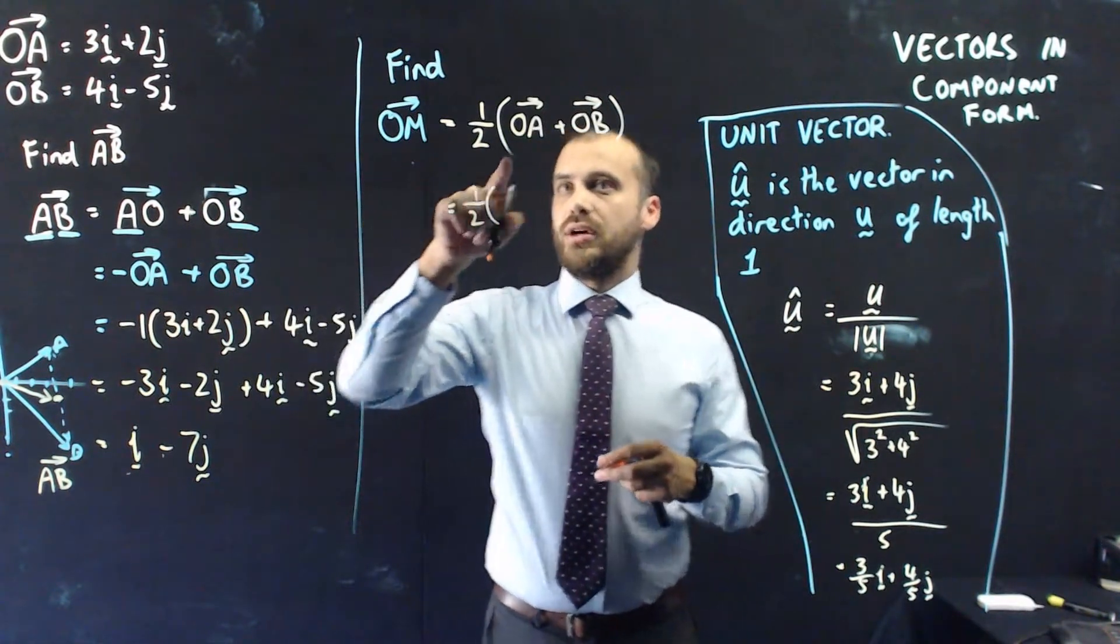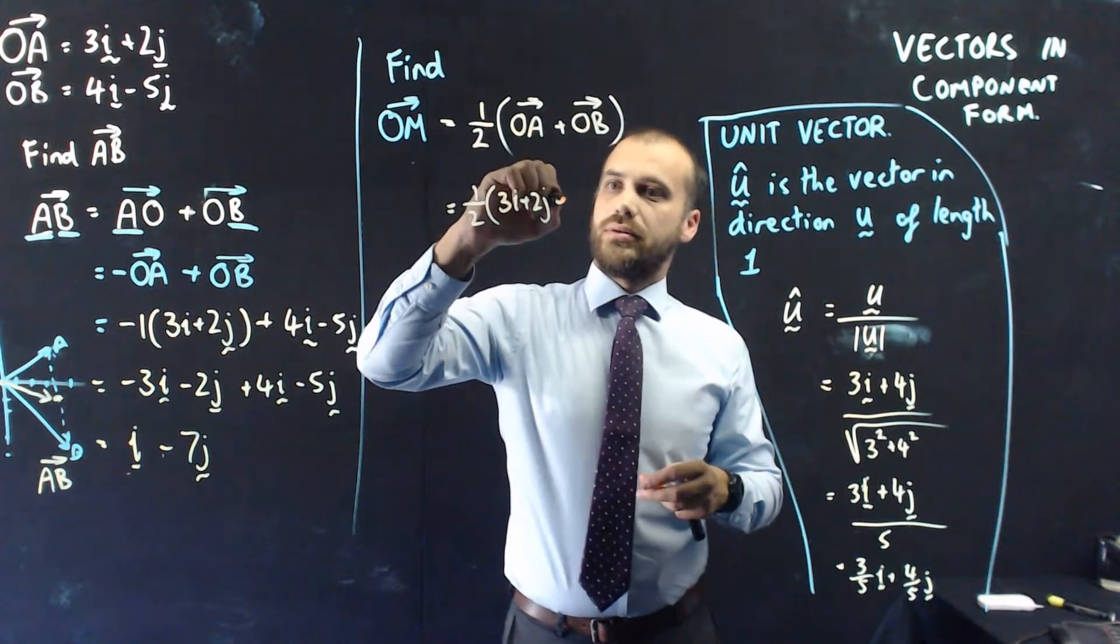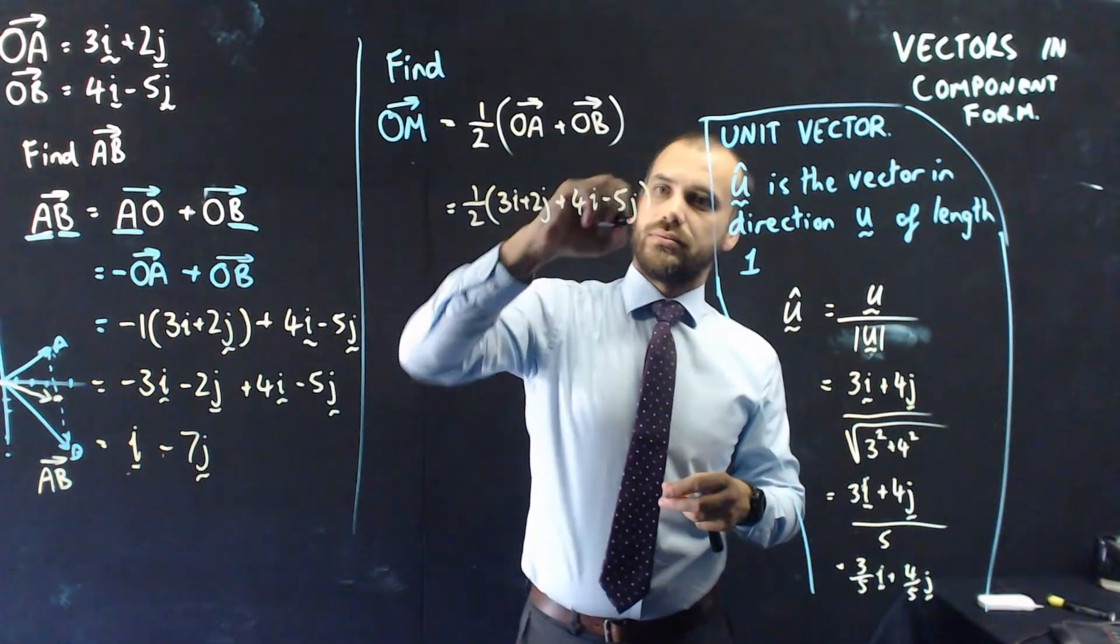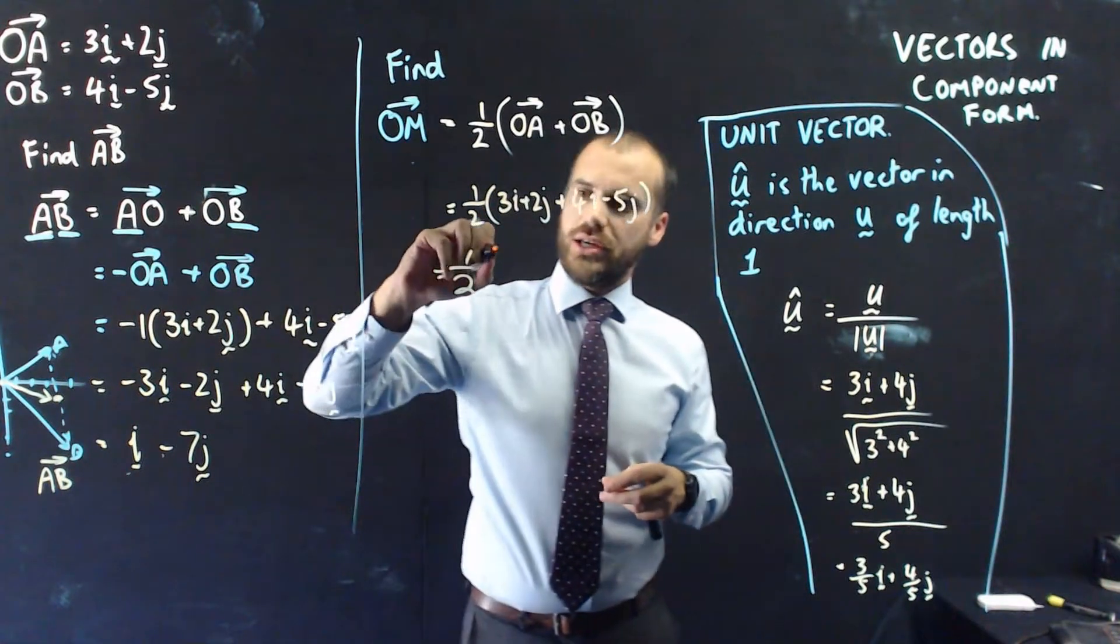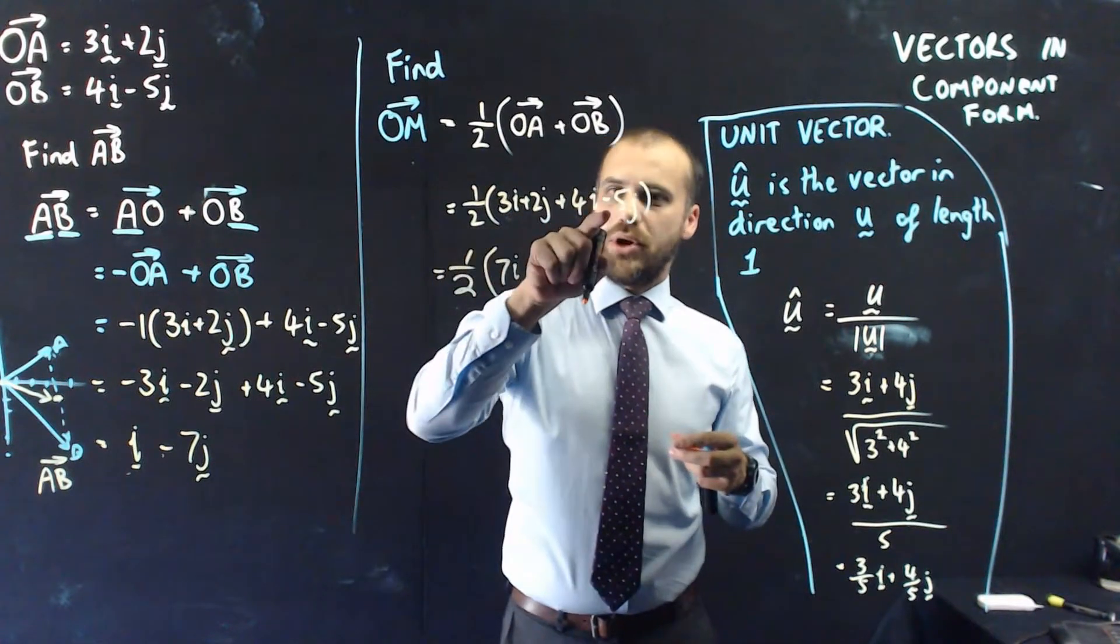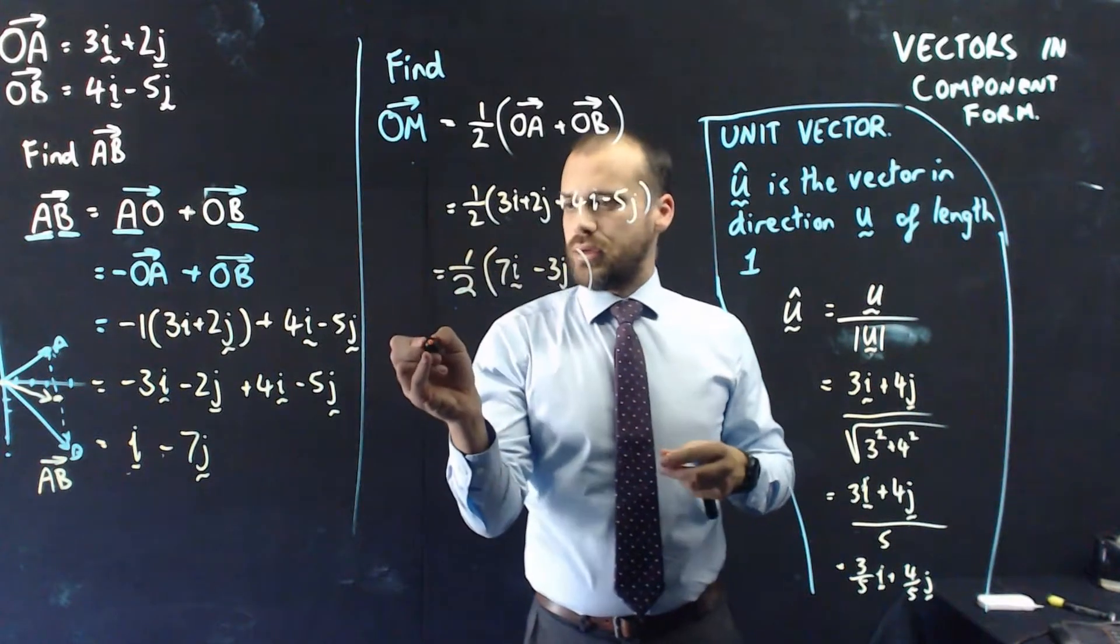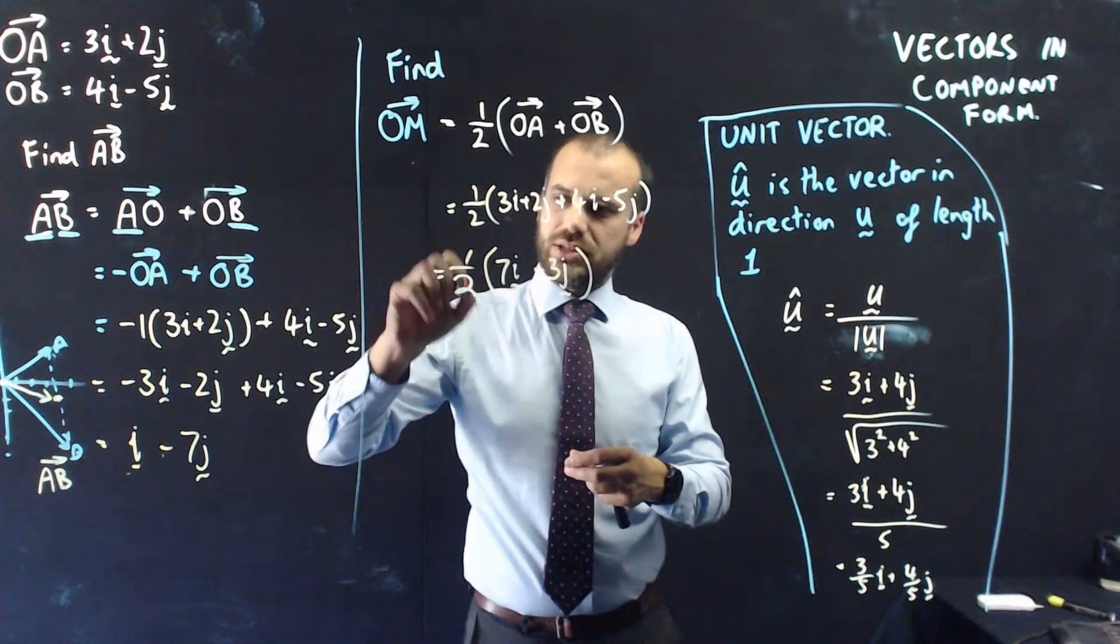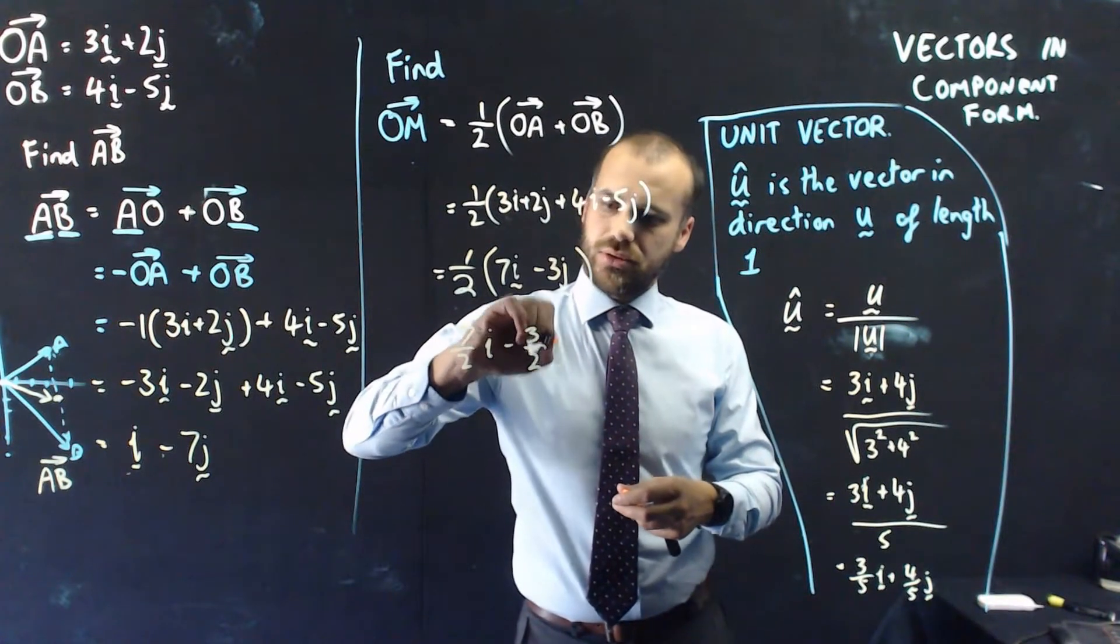1 half OA, so 3I plus 2J, plus OB, 4I minus 5J. So, we get 1 half. 3I plus 4I is 7I. And 2J minus 5J is minus 3J. We could leave it like that if we had to, but it makes more sense to do 7 over 2I minus 3 over 2J.